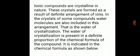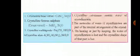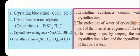Ionic compounds are crystalline in nature. These crystals are formed as a result of a definite arrangement of ions. In the crystals of some compounds, water molecules are also included in this arrangement — this is water of crystallization. The water of crystallization is present in a definite proportion in the chemical formula of the compound. Crystalline blue vitriol, copper sulfate, has 5 water molecules of crystallization: CuSO₄·5H₂O.